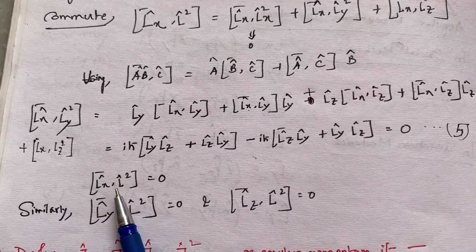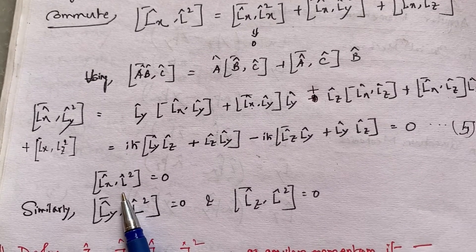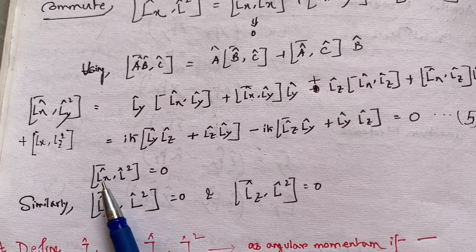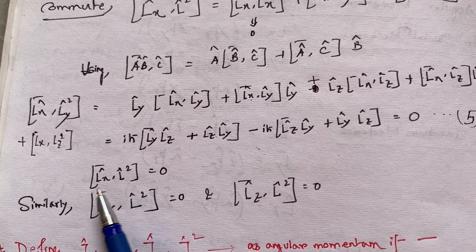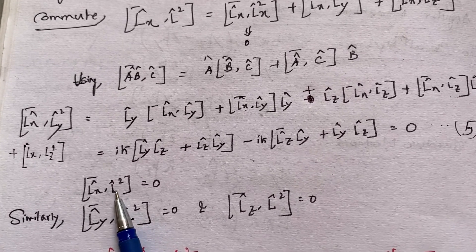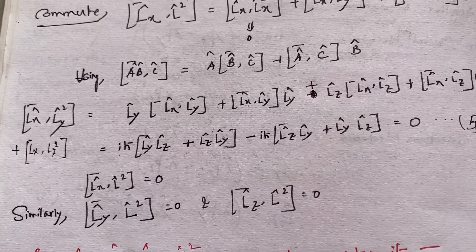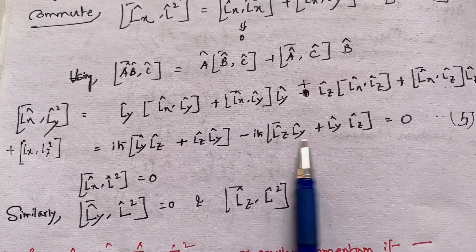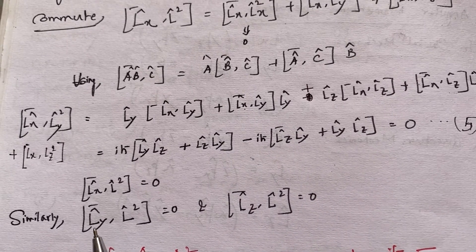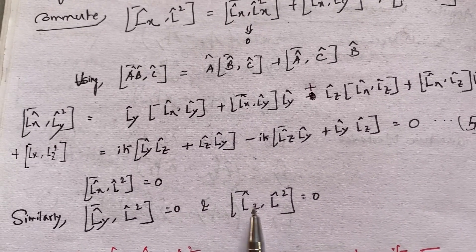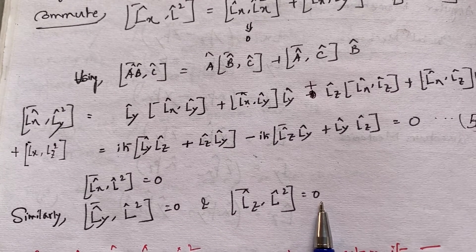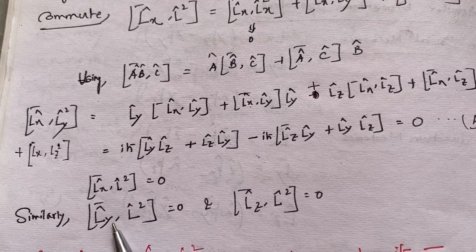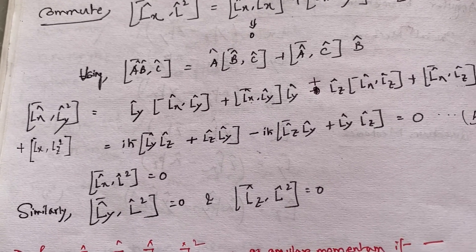Since LX commutes with L², I can get the X-component of angular momentum and the total angular momentum value simultaneously, meaning L² and LX have a common eigenstate. Similarly, LY commutes with L² and LZ commutes with L², so I can find the total angular momentum and the individual angular momentum components.